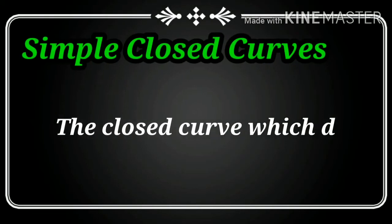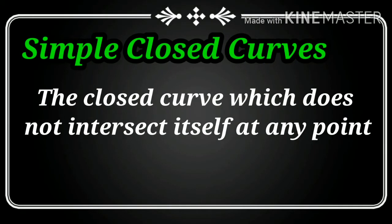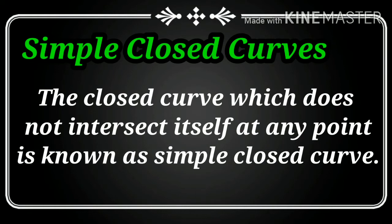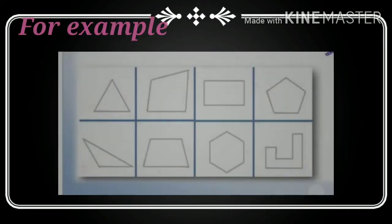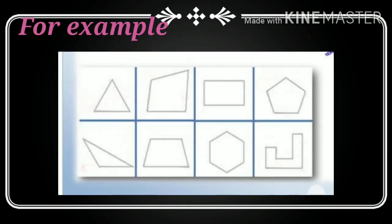Next, we will learn about the simple close curve. The close curve which doesn't intersect itself at any point is known as a simple close curve. Now, you can see some shapes. These are simple close curves because they are not intersecting itself.